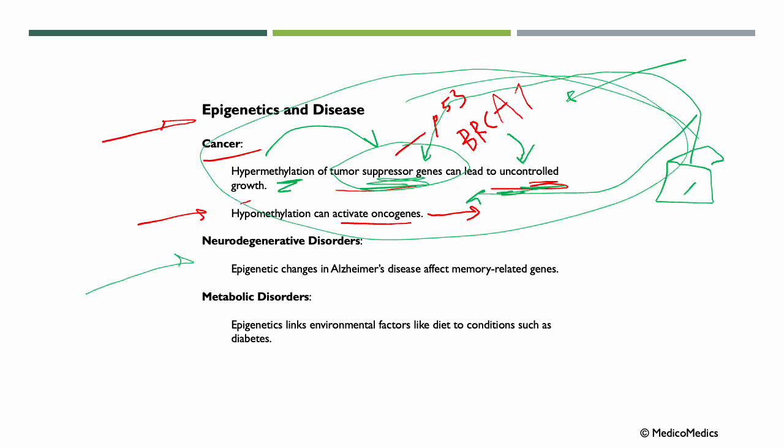We also have, for example, in neurodegenerative disorders. In Alzheimer's disease, for example, epigenetic modifications alter memory-related genes, affecting neuron function and accelerating cognitive decline. In metabolic disorders, epigenetic changes link environmental factors like diet and obesity to diseases like diabetes, and it does this by affecting genes involved in insulin regulation and metabolism.